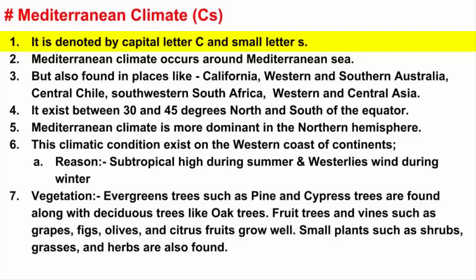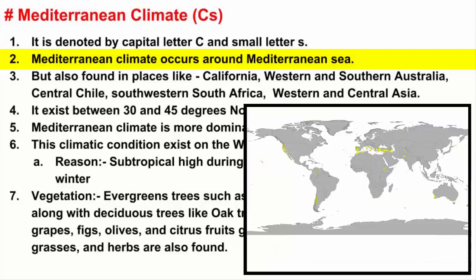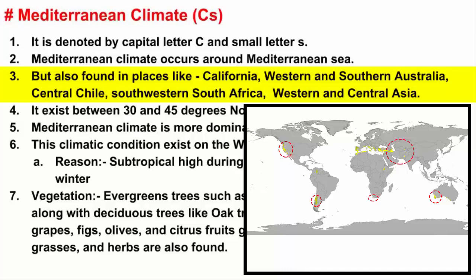As the name suggests, Mediterranean climate occurs around the Mediterranean Sea. But there are other parts of the world where similar climatic conditions exist: California, Western and Southern Australia, Central Chile, Southwest and South Africa, and Western and Central Asia.